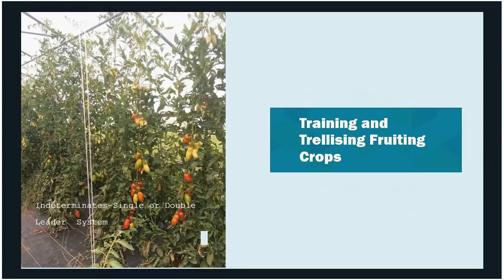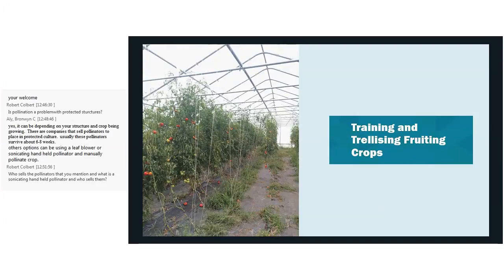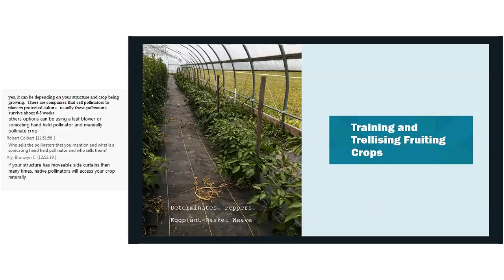For indeterminate tomatoes, train vertically to a single or double leader. Cucumbers can also be trained this way. Peppers and eggplants are somewhat easier to manage with basket weaving, which is less labor-intensive than the vertical single leader system using a trellising string attached to the structure.